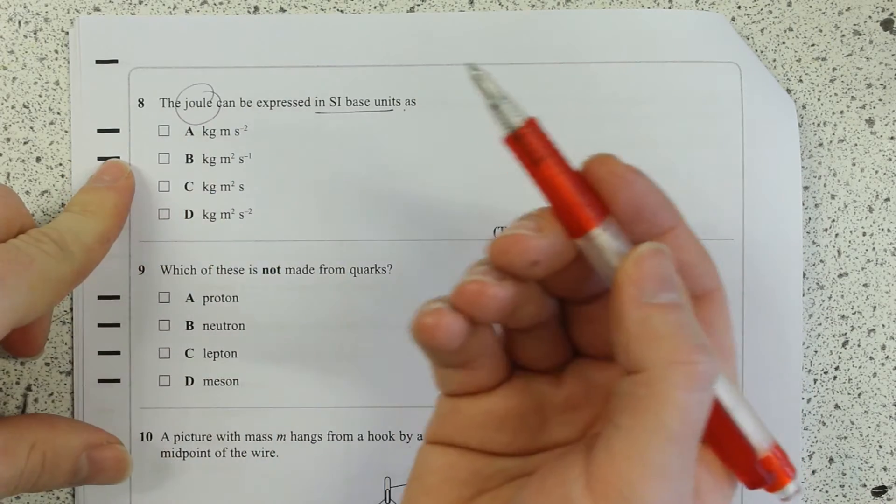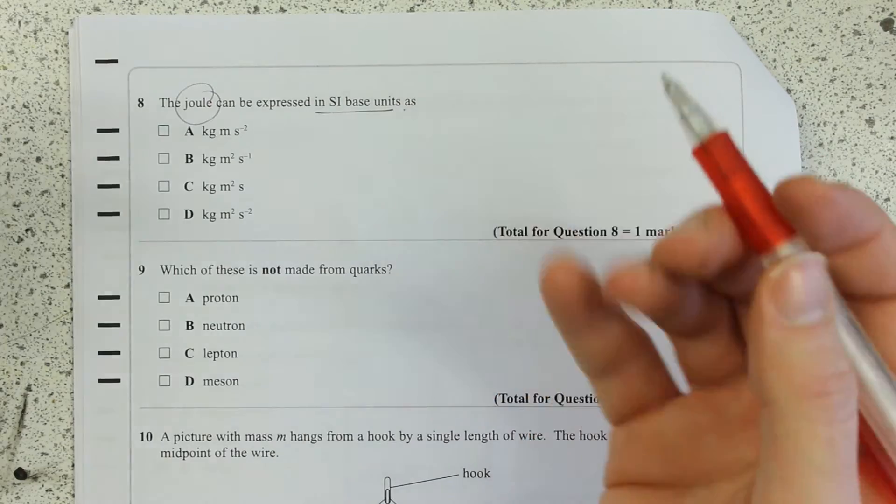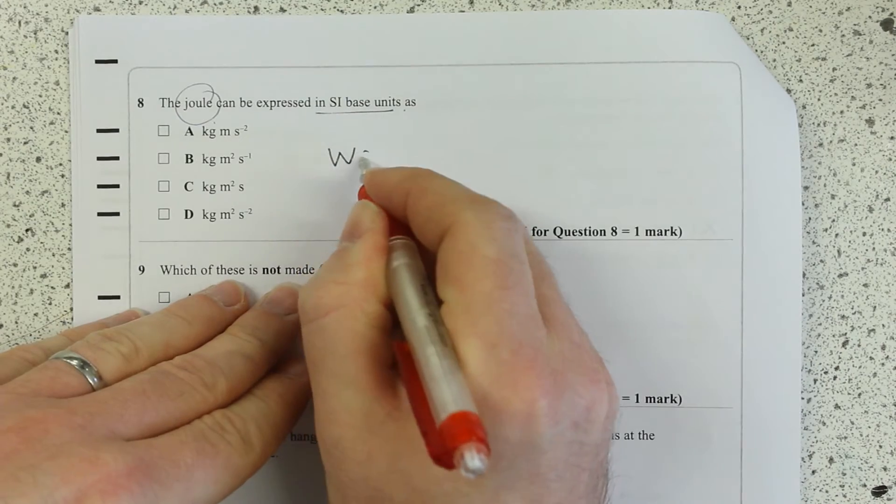When it asks you to think about a joule, I always think, well what's the simplest relationship I know which involves energy? I can use any relationship which involves energy. The simplest one I know is the work done.